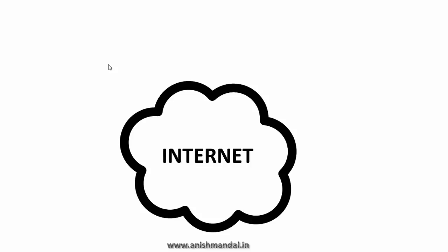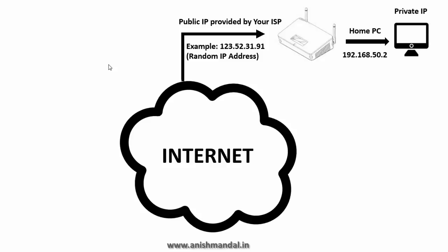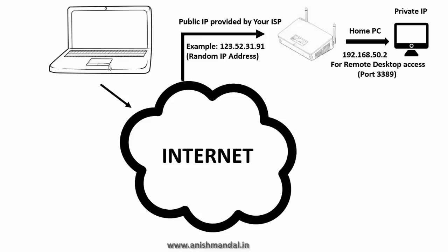So how does it work? Basically, you have taken an internet connection from your ISP that has been configured to your home network using the router, and your home PC is connected to that router. And you want to take a remote desktop connection, which works on port number 3389, from your laptop or your office computer which is connected on the internet.